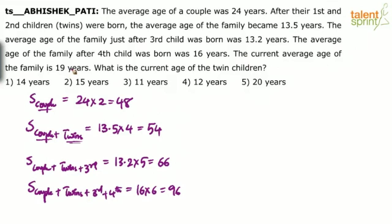The current average age of the family is 19 years, with the same members — the couple plus twins, the third child and the fourth child. Now, 19 into 6 is 114, and the previous sum was 96, so the difference is 18 years. Now, immediately after the twins were born, their age was 0 years. So the sum of 4 members — couple plus twins — is actually just the couple's sum since the twins contribute 0.